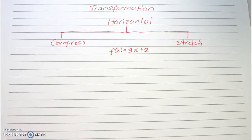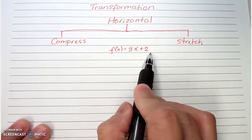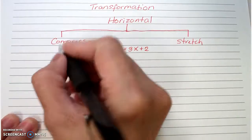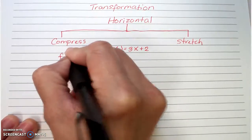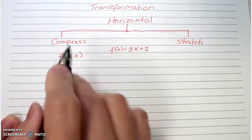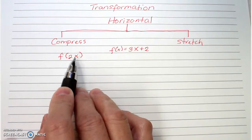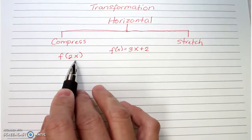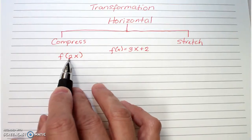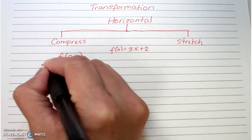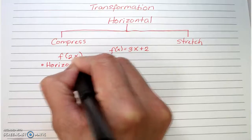Our next topic is on horizontal compression or stretch. The best way to teach this type of transformation is to give an example. For example, this is your function. A horizontal compression would be something that looks like this. Anything that happens inside the parentheses affects the horizontal axis or the x-axis. We also have to take note that anything that happens inside actually tells us the opposite — so this might seem like a big number, but really what you're doing to your function is shrinking or compressing it by a factor of one-half. This is described as a horizontal compression.